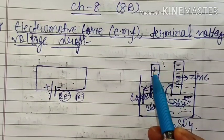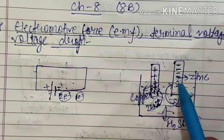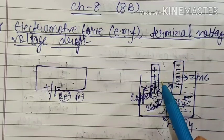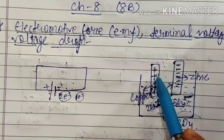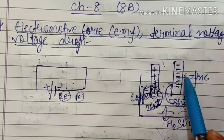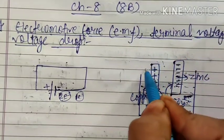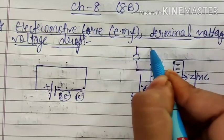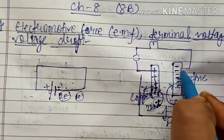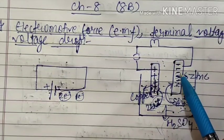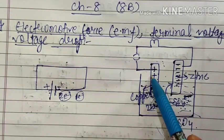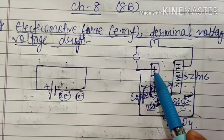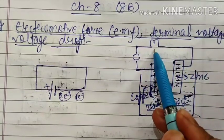As soon as we connect the cell to an external circuit with an appliance, the circuit is closed and current flows — electrons move from zinc to copper through the external circuit, conventional current flows from copper to zinc, and the bulb glows. The bulb glows because of the EMF, the potential difference across the cell.